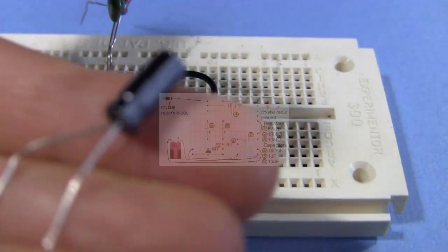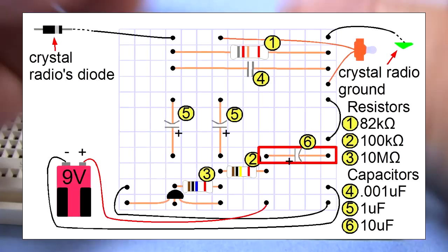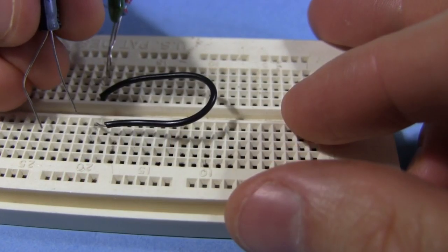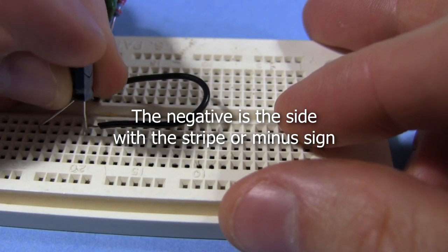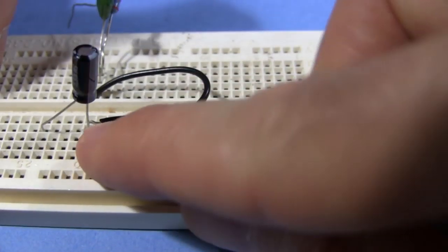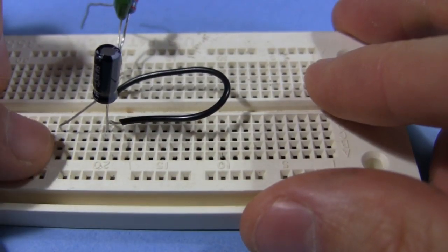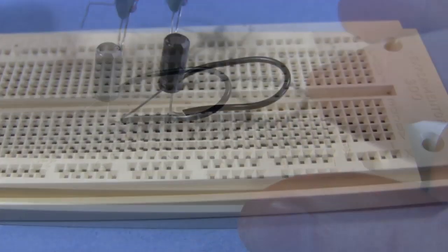Next up is the 10 microfarad capacitor, which is likely an electrolytic capacitor because of its large capacitance. We'll put the negative in the ground row right here. And the positive will put about four holes away. So three holes between them.